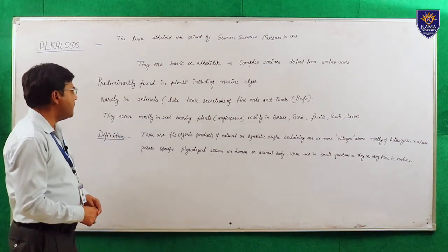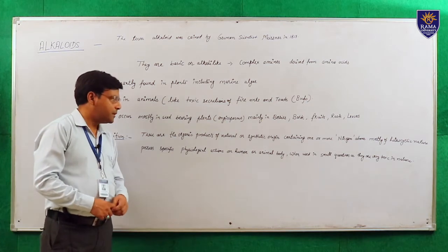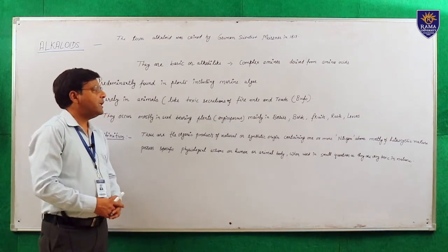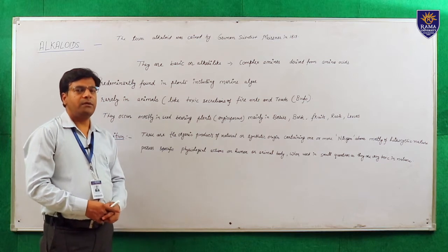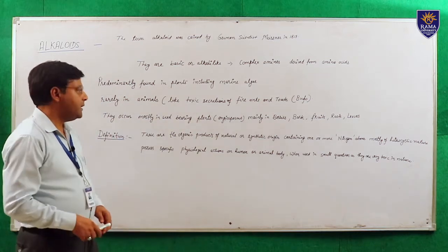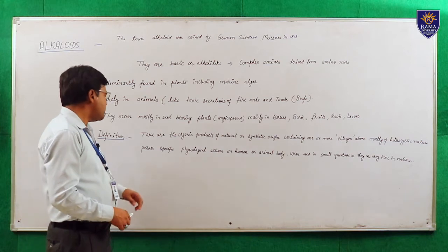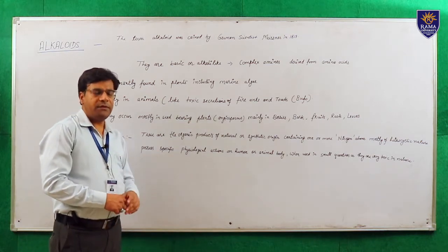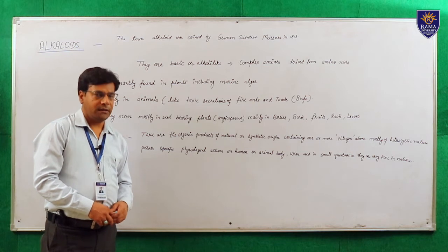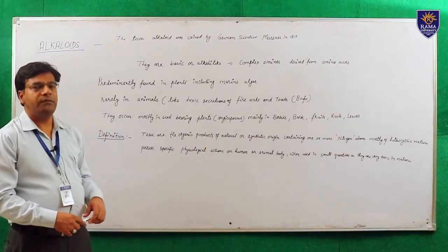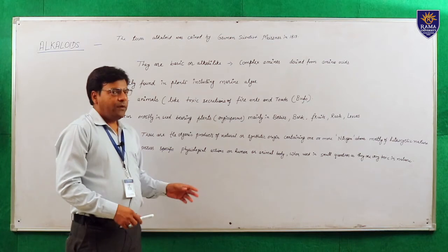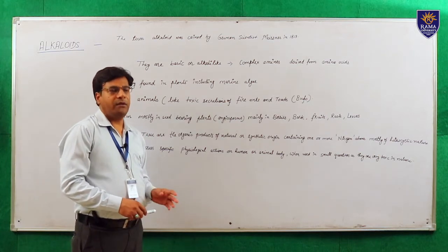Definition of alkaloids: these are the organic products of natural or synthetic origin containing one or more nitrogen atom, mostly of the heterocyclic nature, and they possess specific pharmacological or physiological actions when used in very small amounts because they are very toxic.